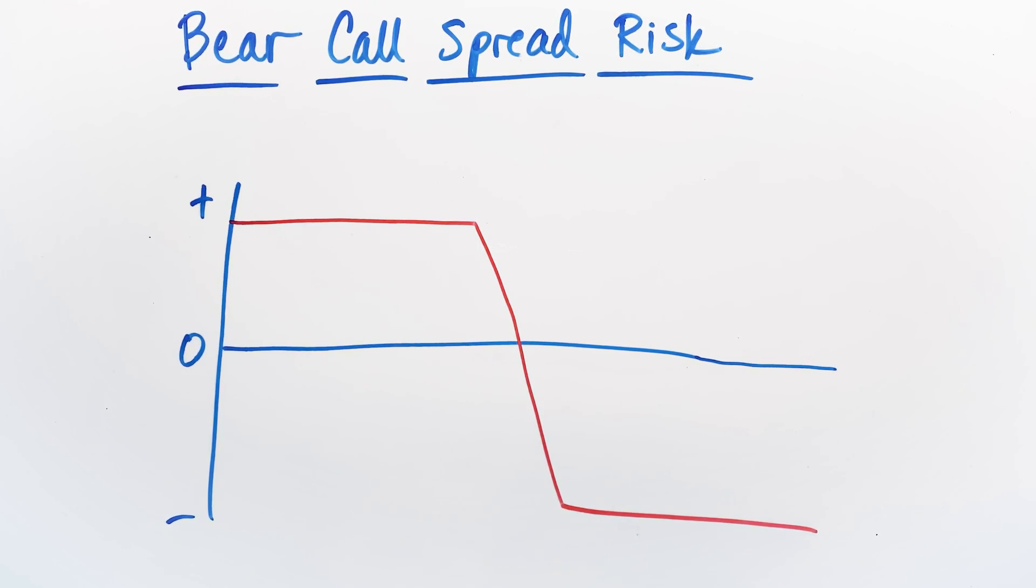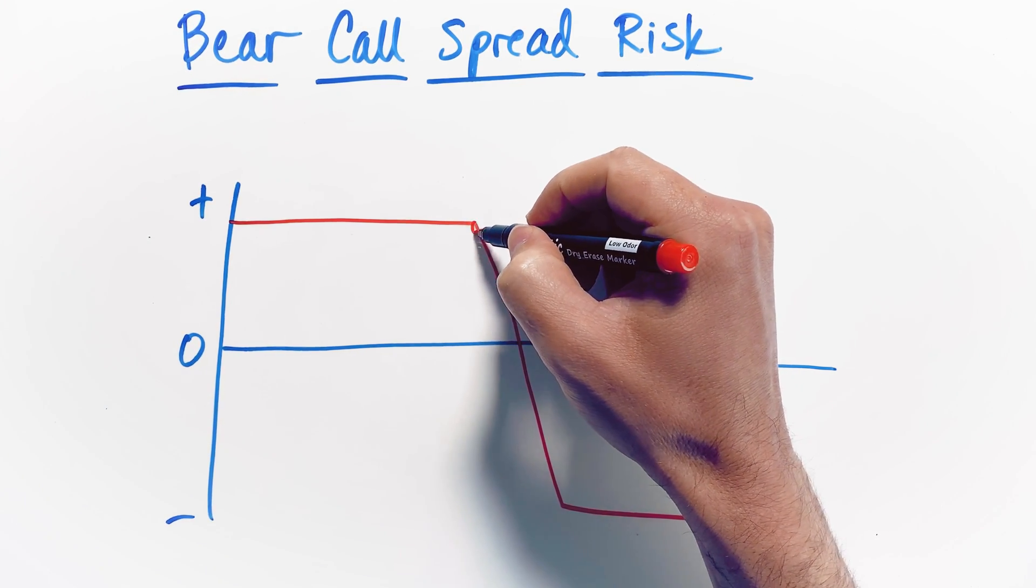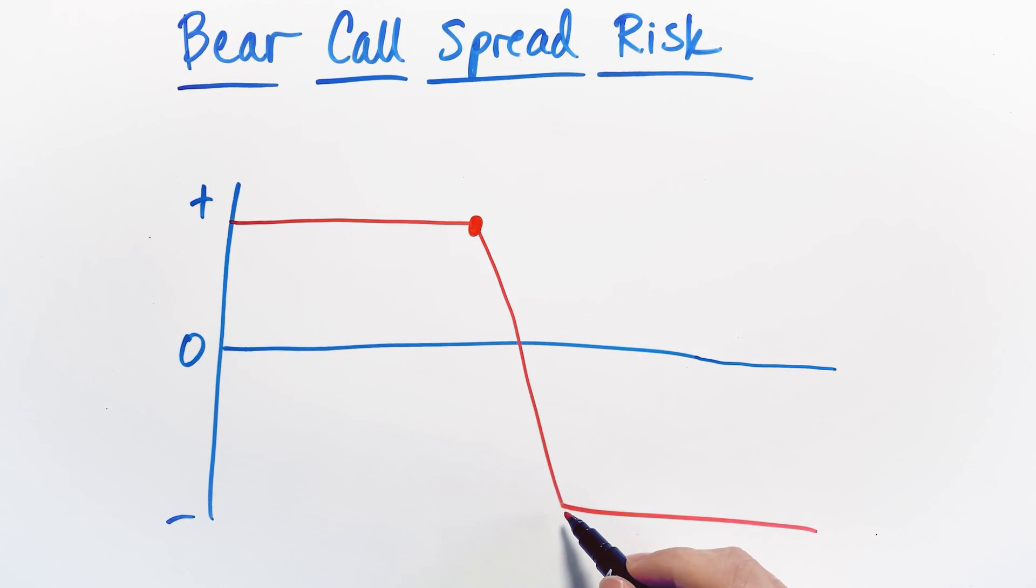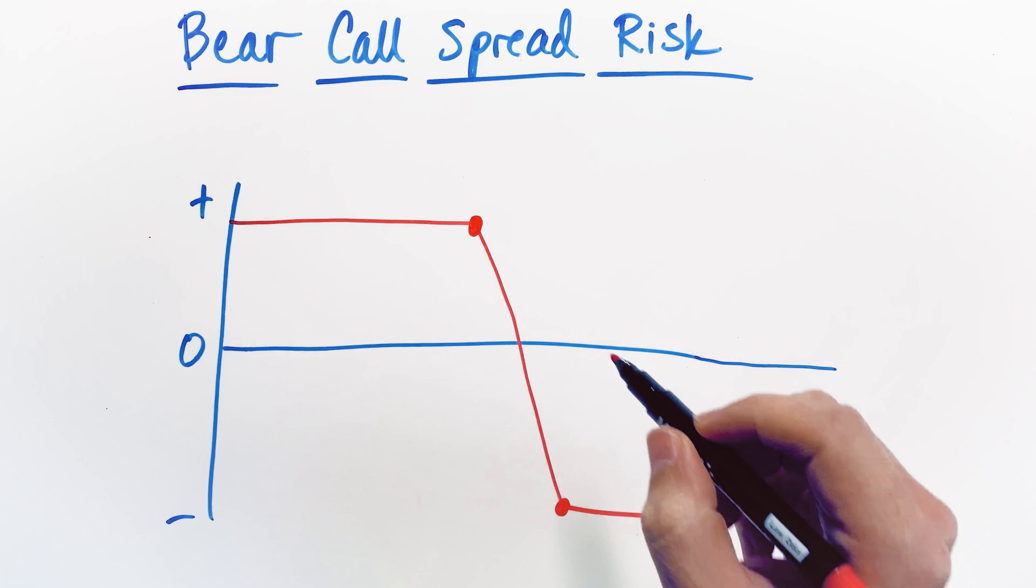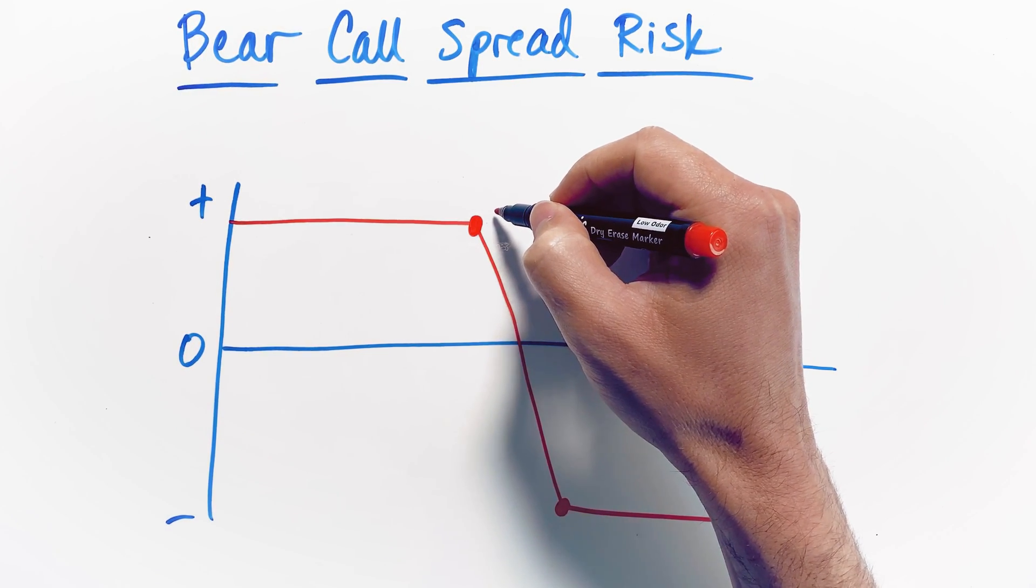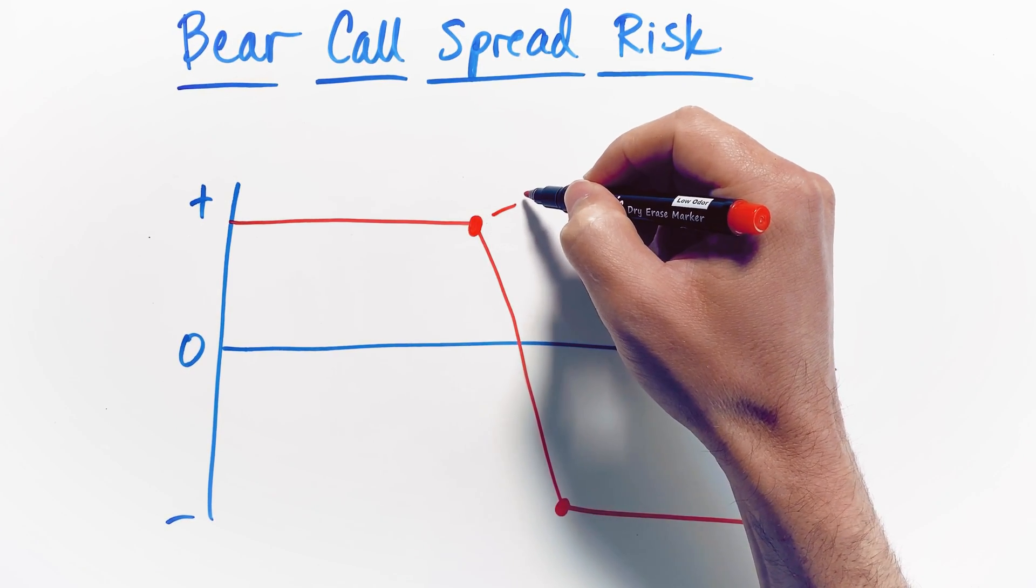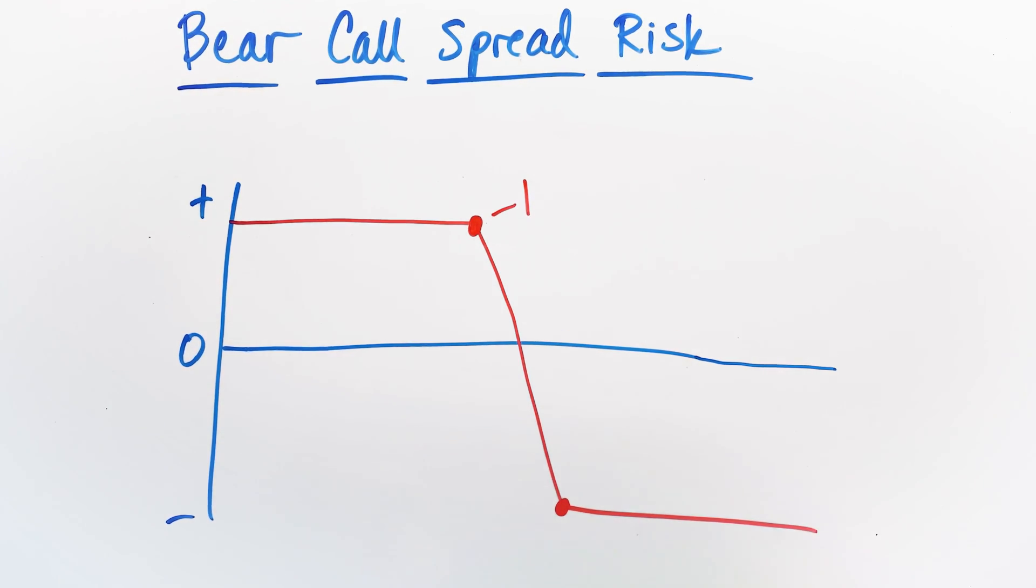So in this case, you can see that the bear call spread payoff diagram pivots at two different points, this point here and then this point here. This point up here is where you sell an option contract. This is going to be the short contract that you sell first. And then down here is going to be the contract that you go long to create this spread.